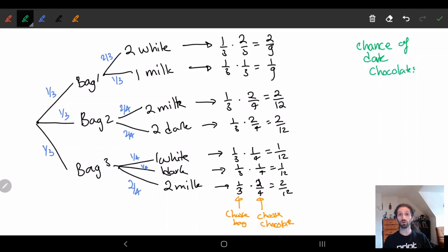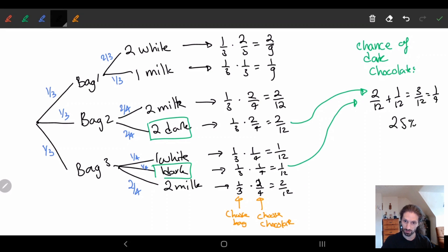So we basically want to see when we have dark chocolate. We have dark chocolate here and we have dark chocolate here. So basically we have this chance and we have this chance, so we're just going to add them up. So we have 2/12 plus 1/12, 3/12, which is equal to 1/4. So we have a 25% chance of getting a dark chocolate, which is a lot less than the 3/11.